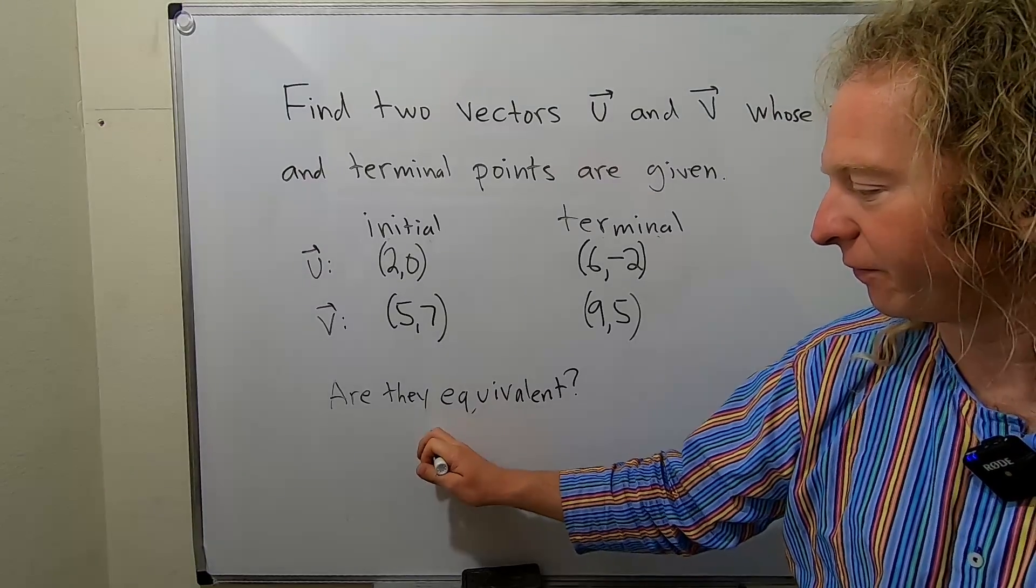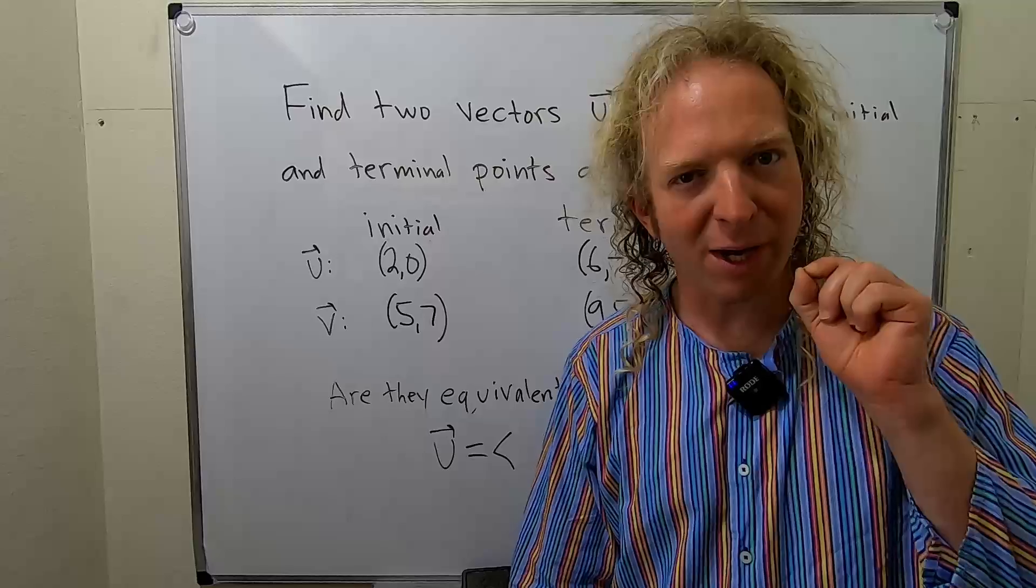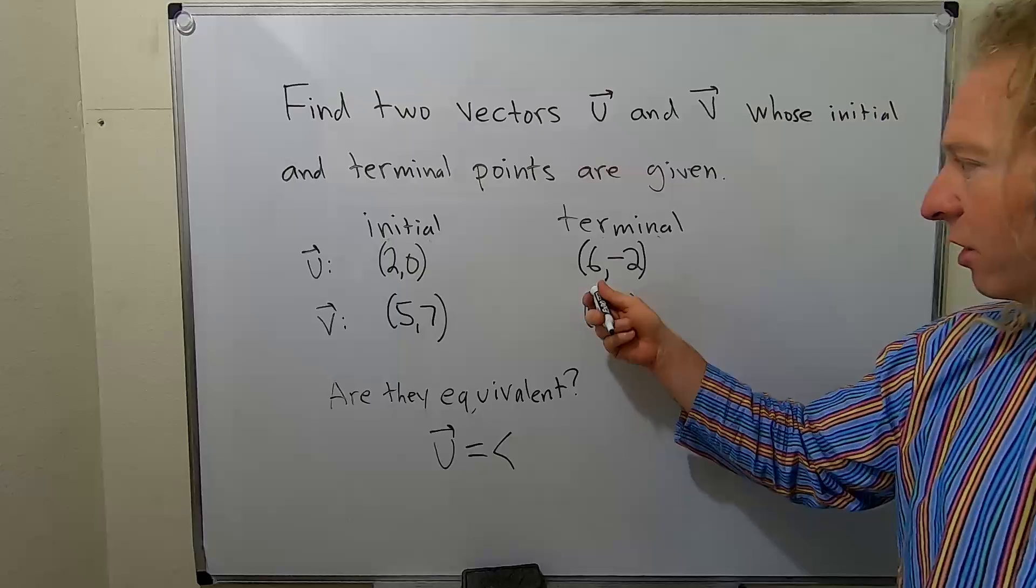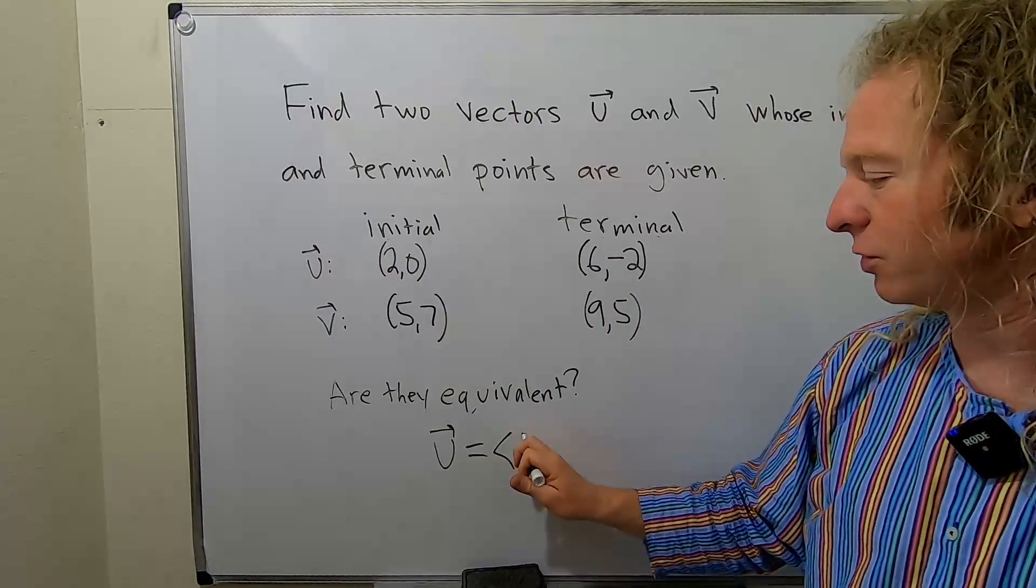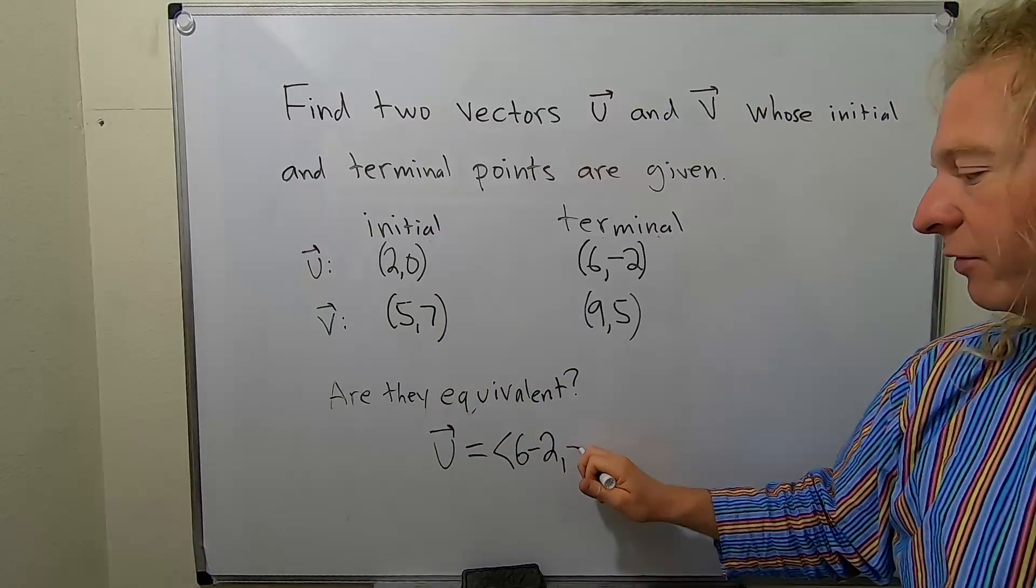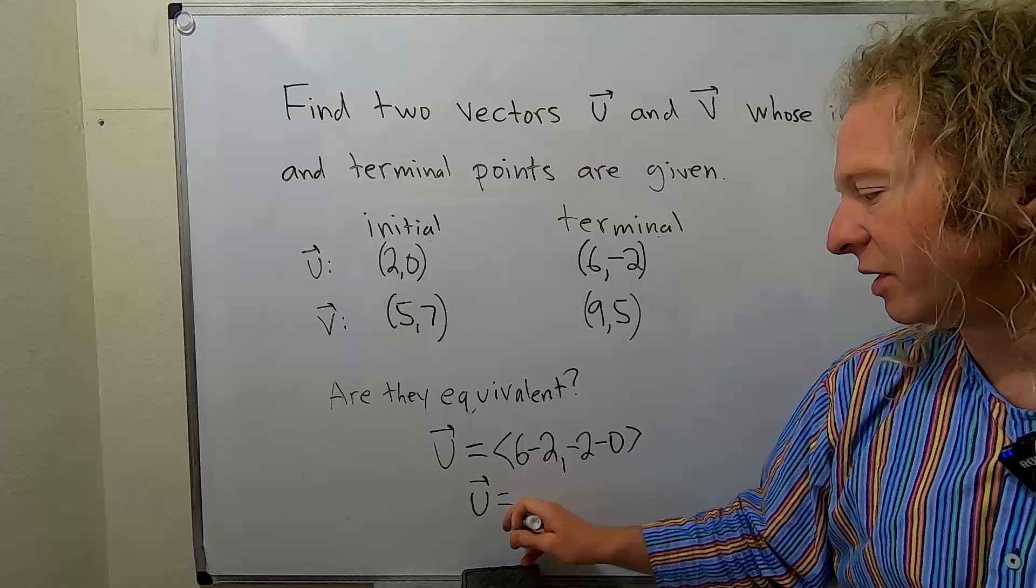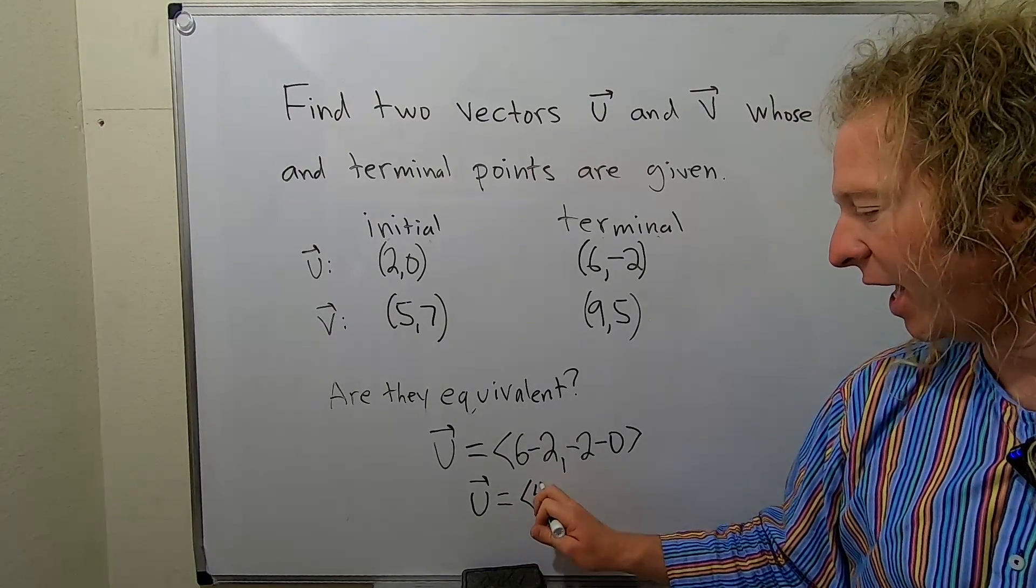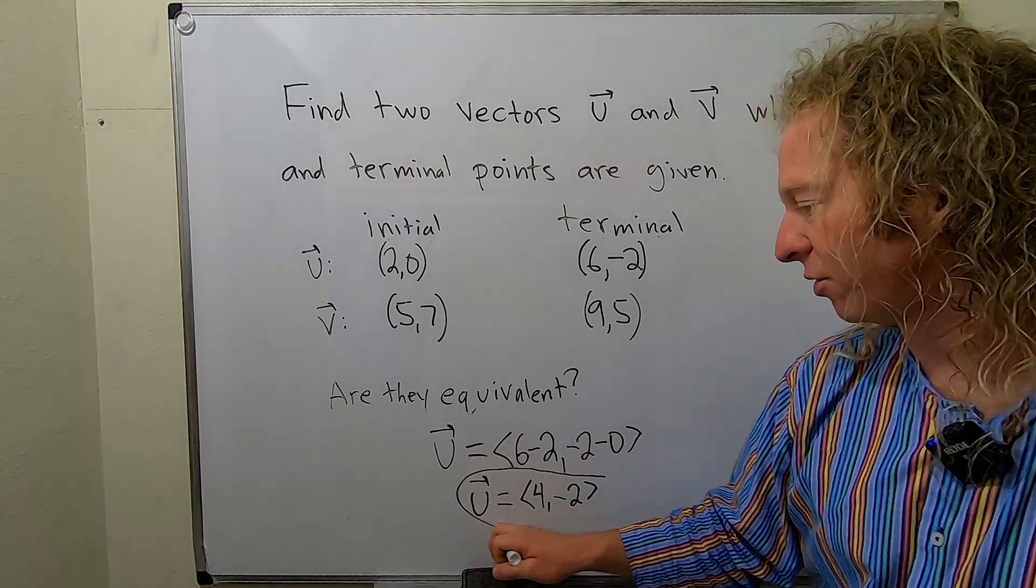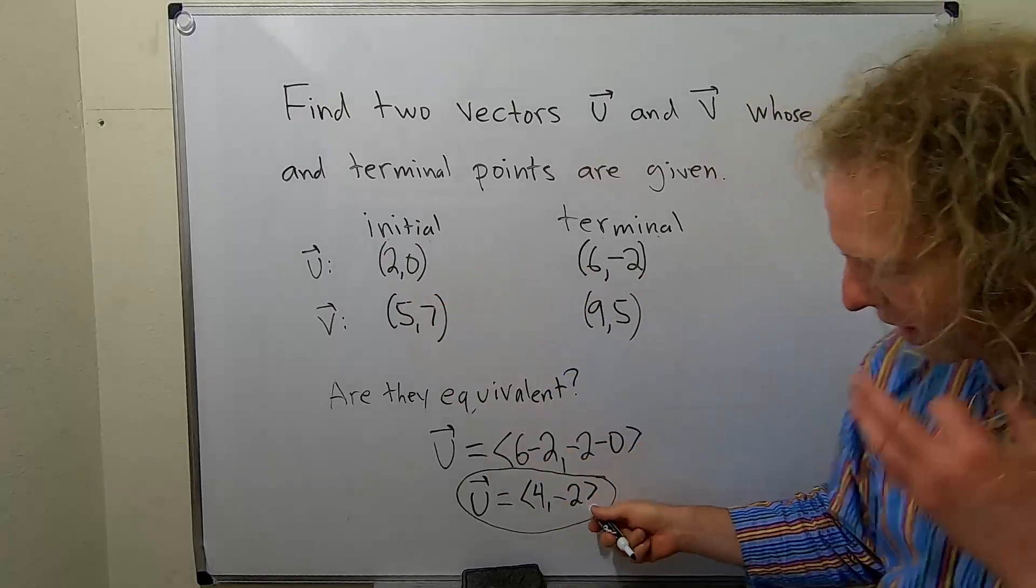To do that, all we have to do is subtract. The formula is always terminal minus initial. So we take this point and subtract it from this point—you just subtract the coordinates. So you do 6 minus 2, and then you do negative 2 minus 0. This gives us 6 minus 2 is 4, and negative 2 minus 0 is negative 2. So that would be our vector u: (4, -2).